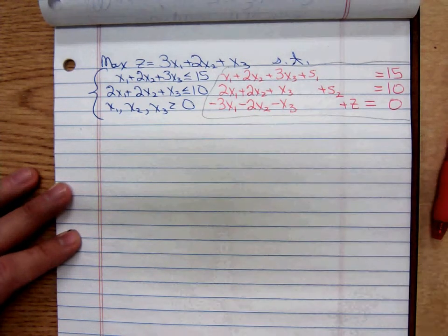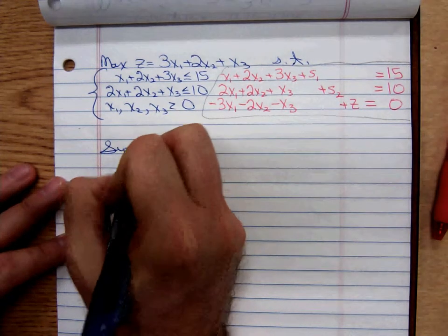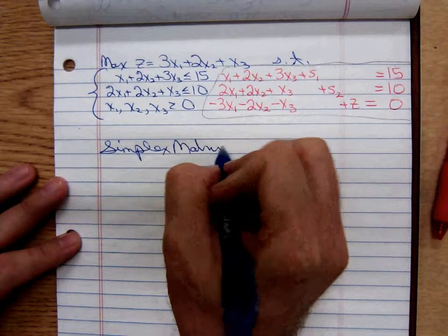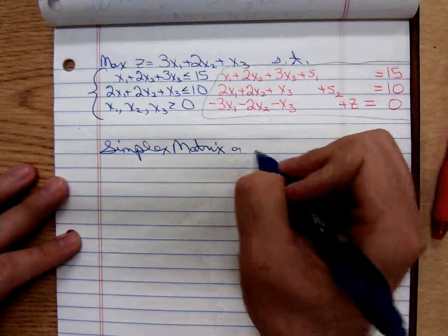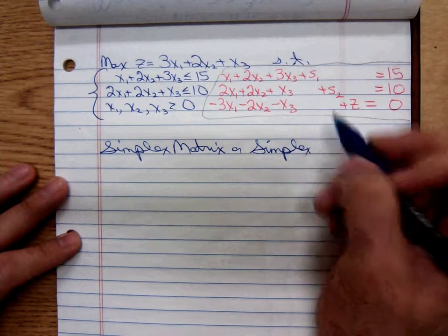Using that system of equations, I'm going to set up a matrix. I'll call this the simplex matrix. It's also called the simplex tableau. I guess if you want to be fancy and not set up a matrix.